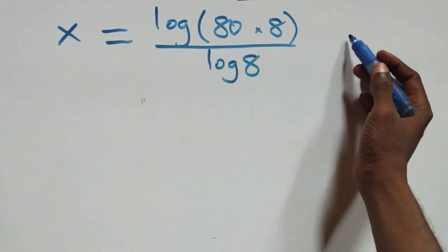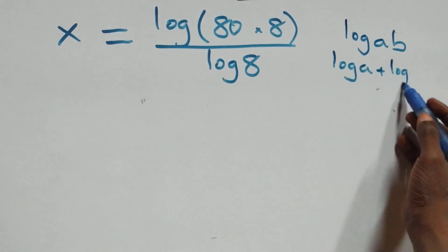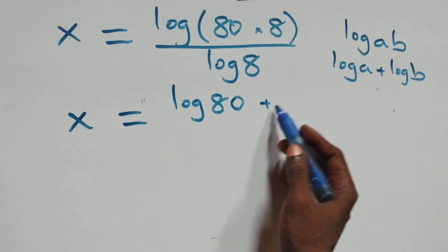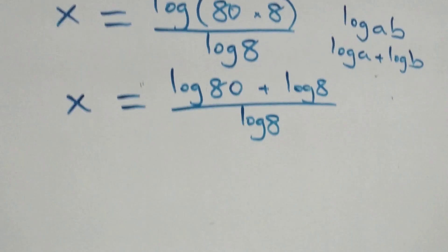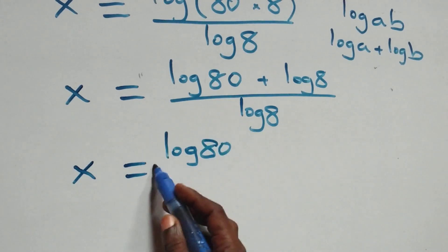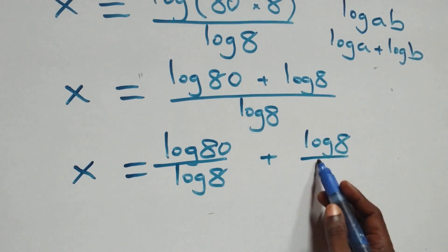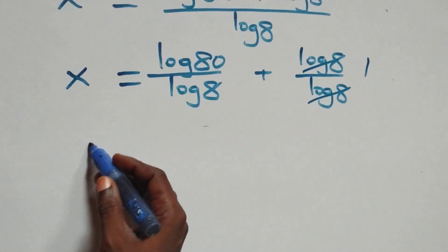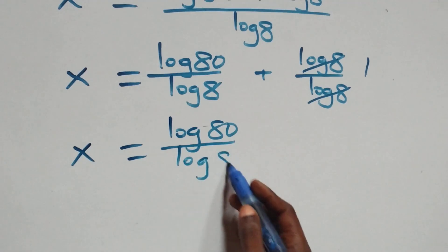This follows from the product law of logarithms: log(a × b) equals log a plus log b. So x equals log 80 plus log 8, all over log 8. We separate this into two fractions: x equals log 80 over log 8, plus log 8 over log 8. Log 8 over log 8 cancels to one, giving x equals log 80 over log 8, plus 1.